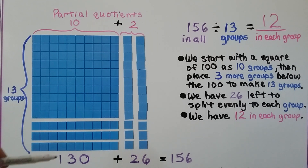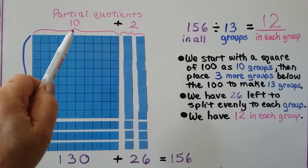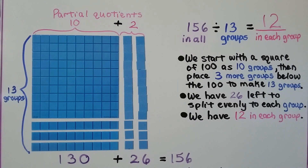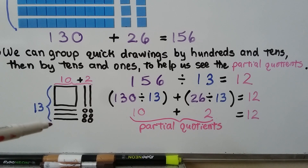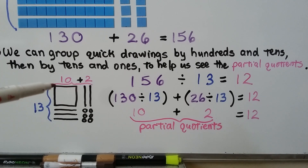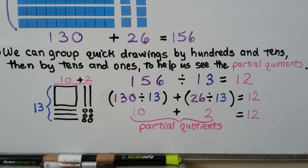We have 130 and 26, and that's equal to 156. Our partial quotients are a 10 and a 2 — it's 12. We can group quick drawings by 100s and 10s, then by 10s and 1s to help us see the partial quotients. We had 156 divided by 13 — here are our 13 groups, 10, 11, 12, 13. We have 10 in each group here, and we added 2 more into each group. Our partial quotients are a 10 and a 2 — there's 12 in each group.